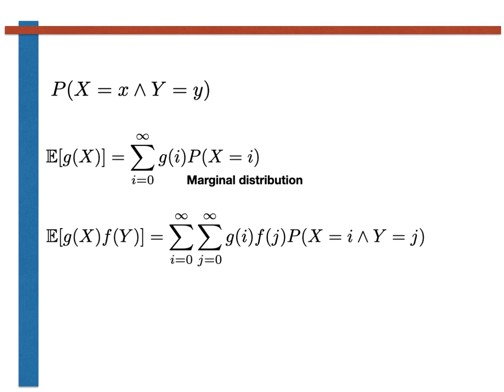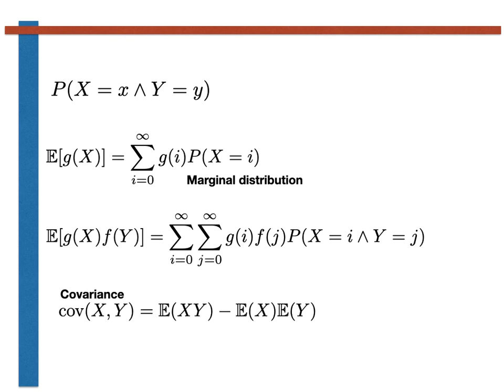These results will prove useful when you come to calculate things like the covariance of two random variables in the problems. The covariance is defined as shown here, and there are examples of how it is computed on the problem sheet you will have to complete.